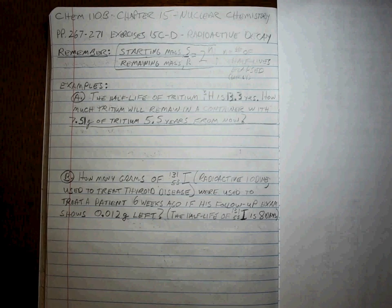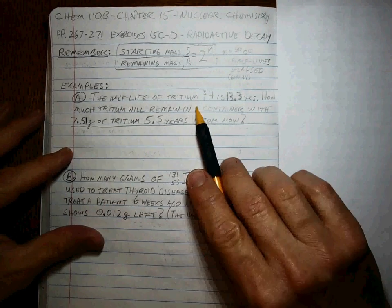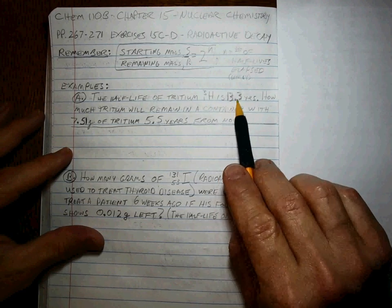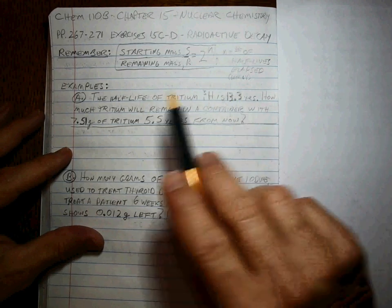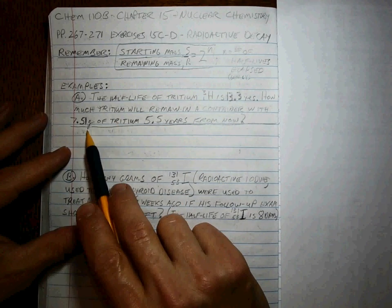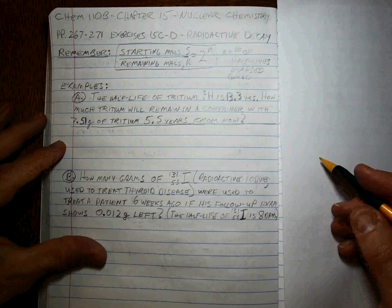Okay, you're back. Let's see how we work this. How much tritium will remain in a container with 7.51 grams of tritium in it after 5.5 years have gone by.